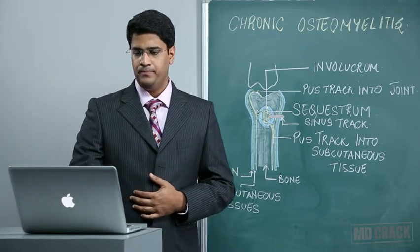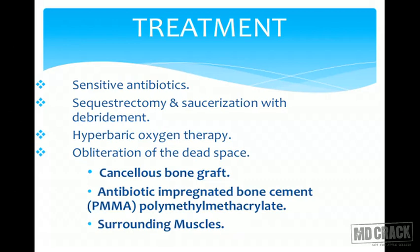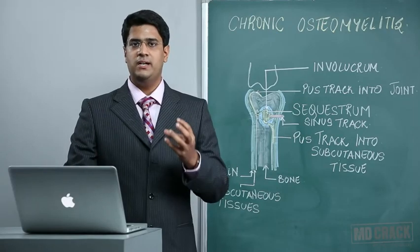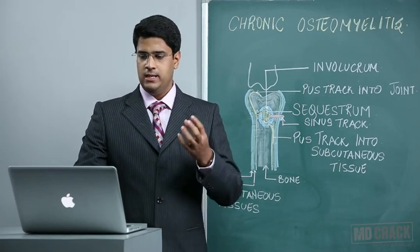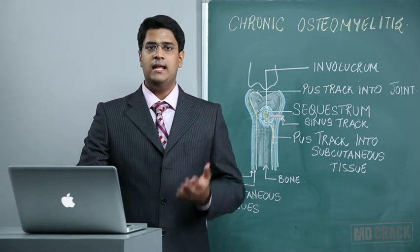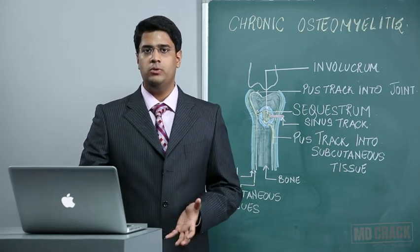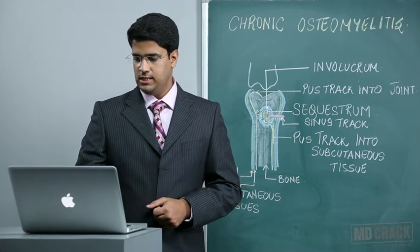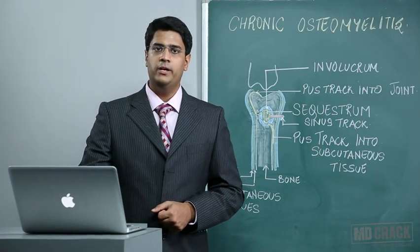Newer techniques include hyperbaric oxygen therapy. Obliteration of dead space is very important, because any remaining nidus of infection can cause persistence. Dead space can be filled by: firstly, cancellous bone grafting from the patient; secondly, antibiotic-impregnated bone cement — polymethyl methacrylate mixed with antibiotics; and thirdly, myodesis — using surrounding muscles to cover the dead space. These are three common methods to obliterate dead space.